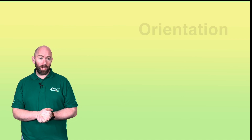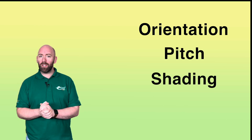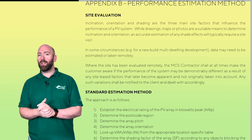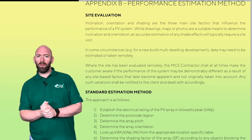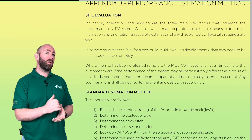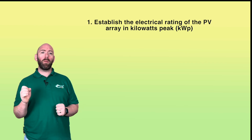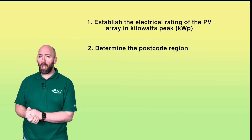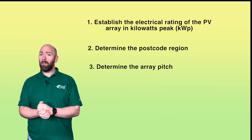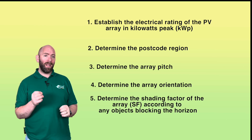Calculating the annual electrical generation from the PV array brings us back to the three main factors: orientation, pitch, and shading. The MCS document MIS 3002, appendix B, gives us a performance estimation method to follow. By standardising this process it makes it easier for solar installers to provide pre-sale information to customers. The five steps are: 1. Work out the rating of the PV array in kilowatt peak. 2. Ascertain the postcode region. 3. Determine the pitch of the array. 4. Determine the orientation of the array. And 5. Assess any shading. Remember, these are estimated figures and it's important to inform the customer of this.